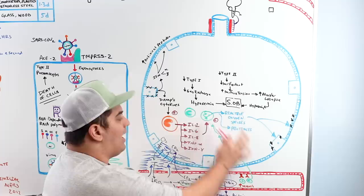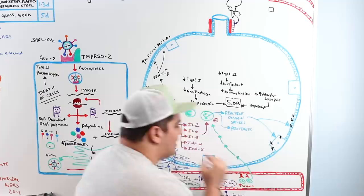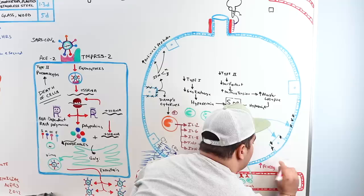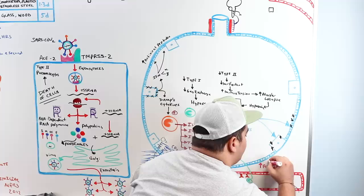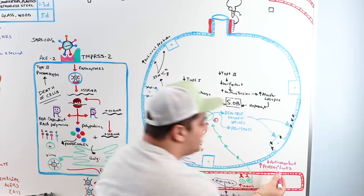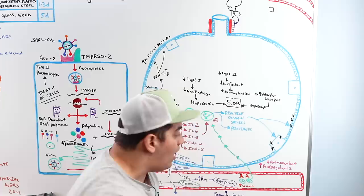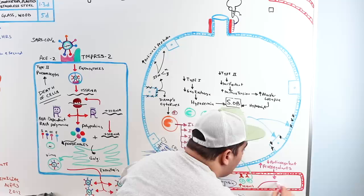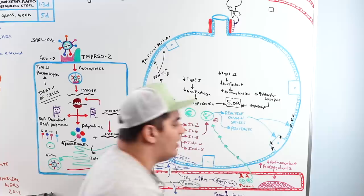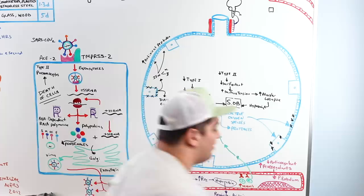The cytokine storm also increases pro-coagulant activity while decreasing anti-coagulant activity, promoting clot formation. This can lead to pulmonary emboli — small clots within the pulmonary circulation — a serious complication seen in severe COVID-19 cases.